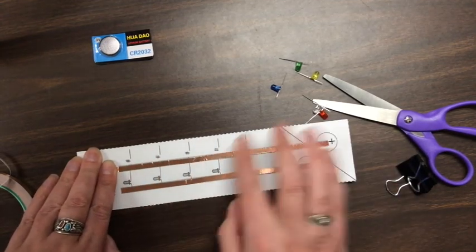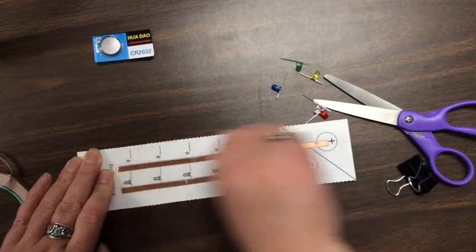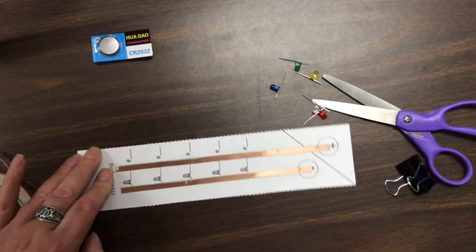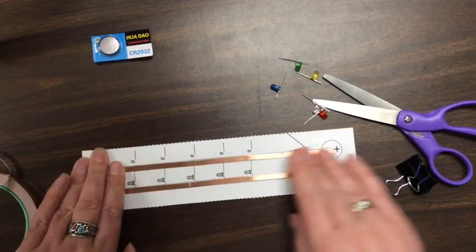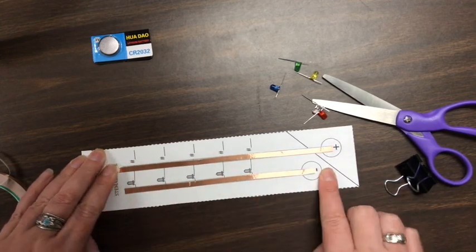If you happen to get a break in your copper tape that goes all the way through, copper tape is pretty inexpensive, so you should just start over with a piece of copper tape that's one whole piece for each side of your circuit.